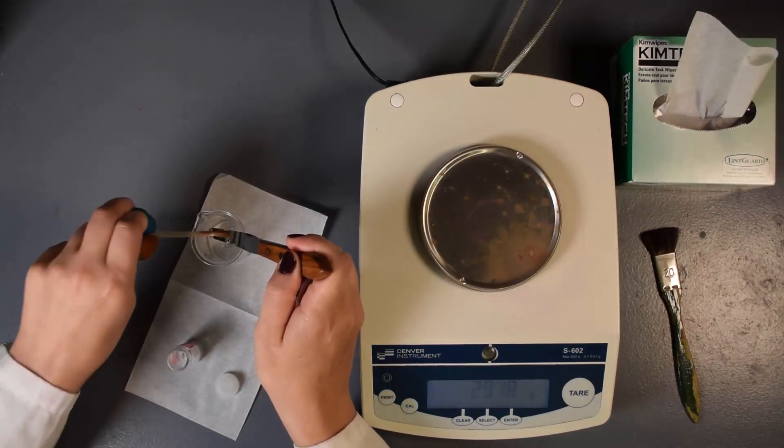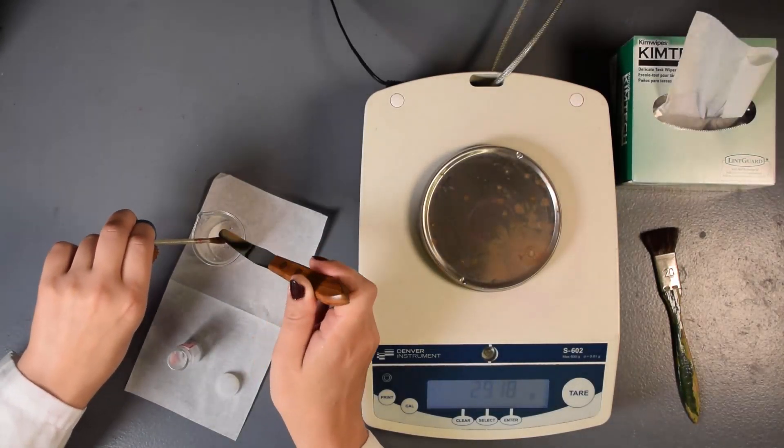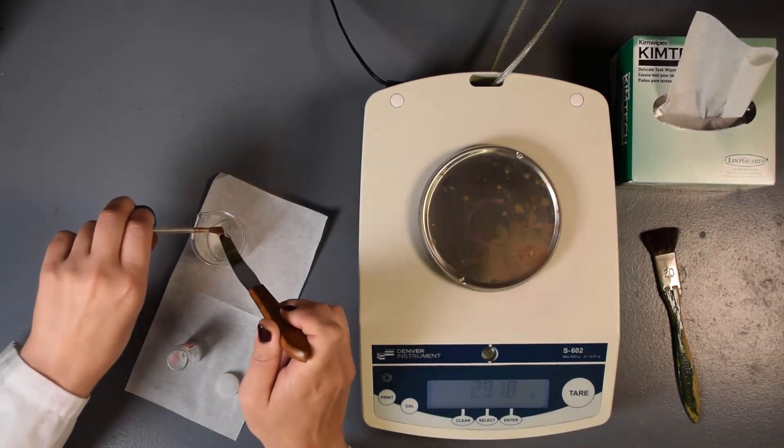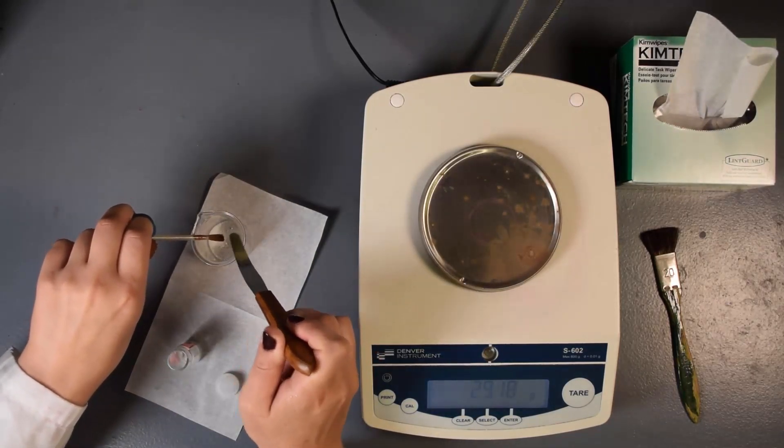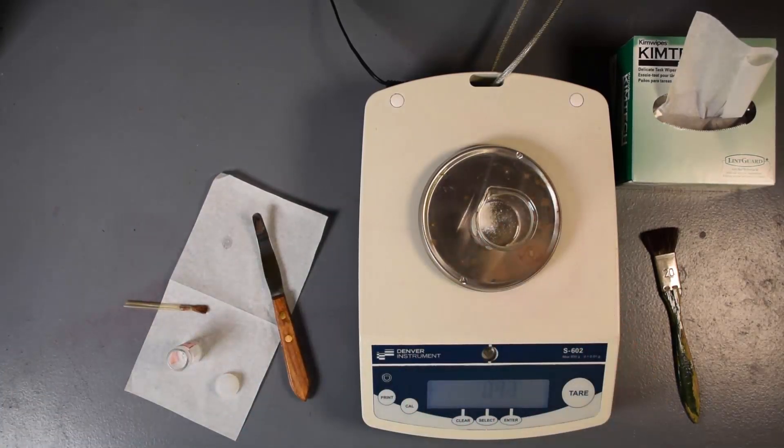It is critically important to achieve a quantitative transfer and not lose any compound outside of the beaker or container. Make sure the spatula is at or below the top of the beaker when brushing with the camel hair brush so that all the compound is brushed into the beaker and not onto the bench top. Reweigh the beaker on the top loading balance.